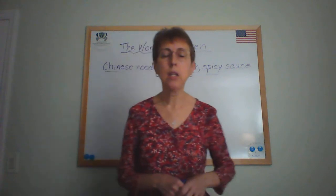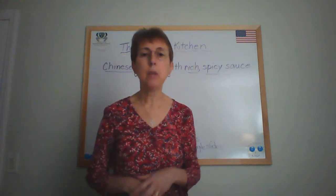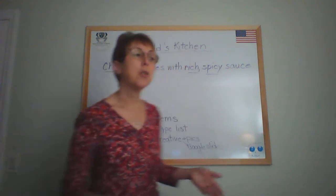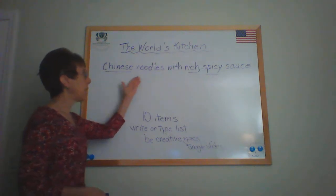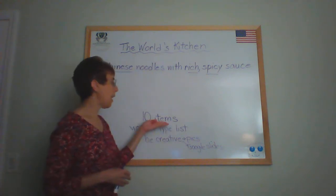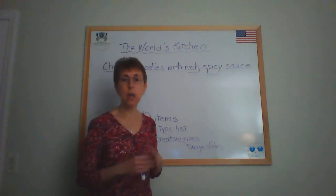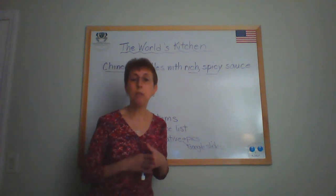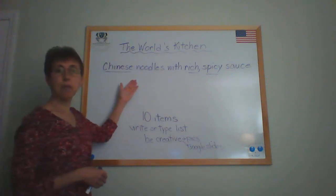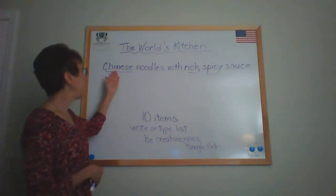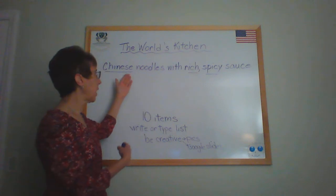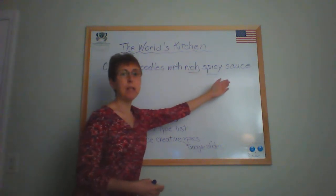So your job for today is to create a menu. The name of the restaurant is called the World's Kitchen and we're looking at foods from around the world. The example that they gave was Chinese noodles with rich spicy sauce. The goal is that you're going to have at least 10 items on your menu, each item from a different country. Here we have something from China, so we use the proper adjective Chinese — Chinese noodles — and then you describe that dish: the Chinese noodles are with rich spicy sauce.